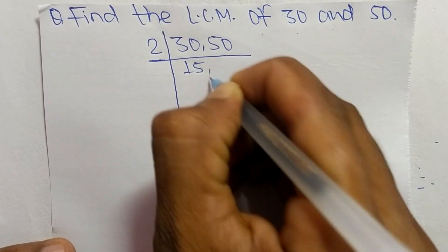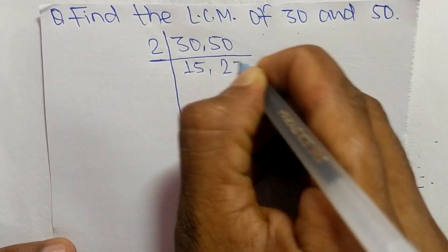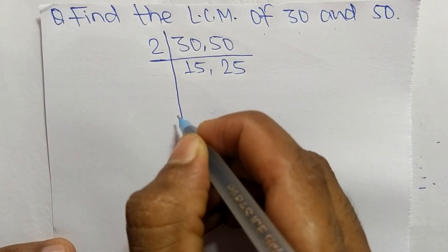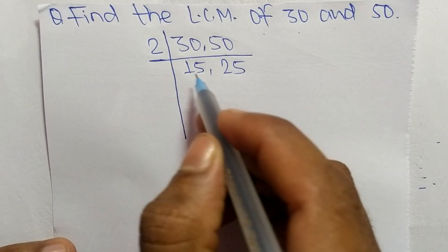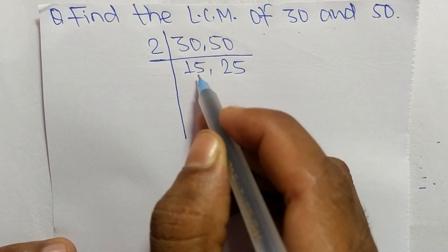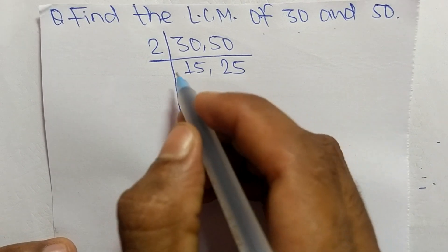2 times 15 equals 30, 2 times 25 equals 50. Now 2 can't divide exactly 15 and 25.